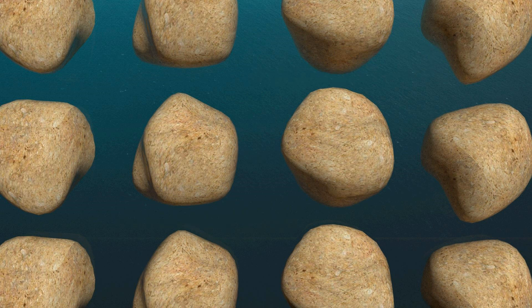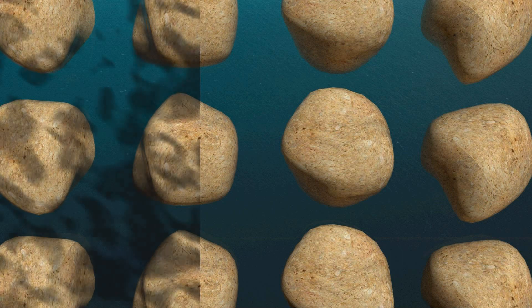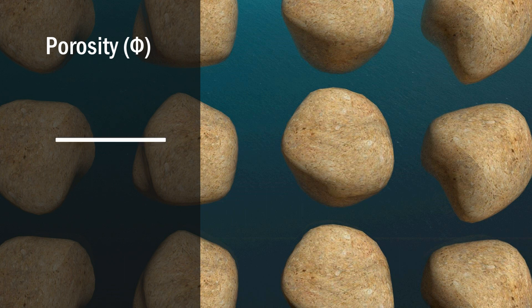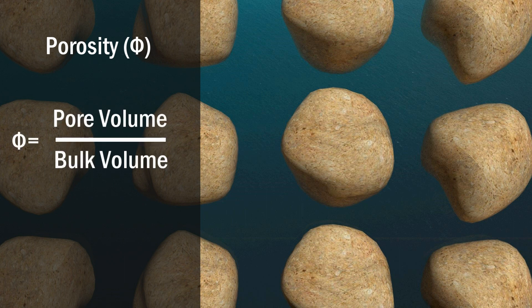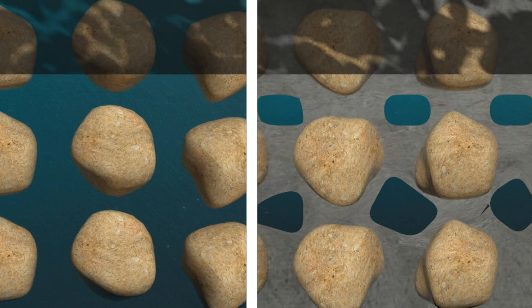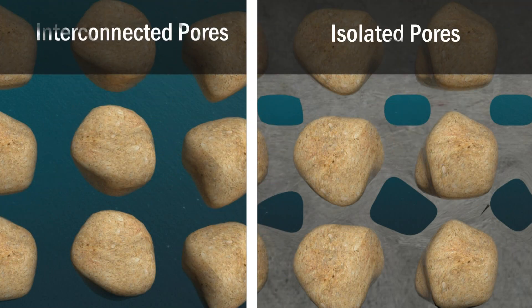In order to know the storage capacity of a reservoir rock, we have to be familiar with a term called porosity. Porosity is the fraction or percentage of pore volume to bulk volume. Bulk volume is V-pores plus V-grains. Porosity can be classified into absolute porosity and effective porosity.